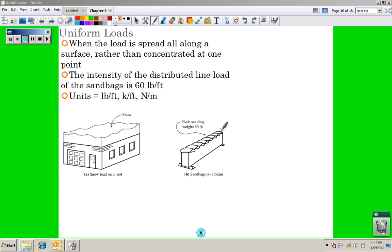Or for instance, when they sandbag on top of a beam. So the intensity of a distributed load in a line would be force per unit distance. So that would be like pounds per foot, kips per foot, or newtons per meter.